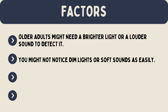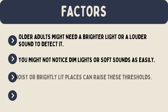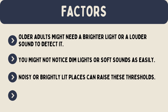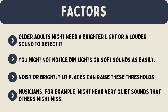Environment: A quiet, dark room can lower your absolute thresholds for sight and sound, while noisy or brightly lit places can raise these thresholds. Experience: People who are trained to notice certain stimuli can have lower absolute thresholds. Musicians, for example, might hear very quiet sounds that others might miss.